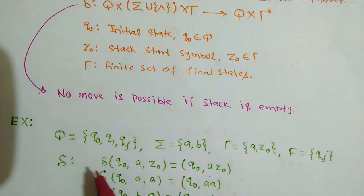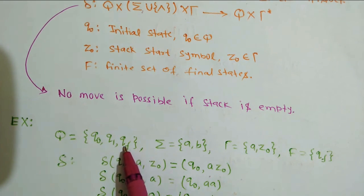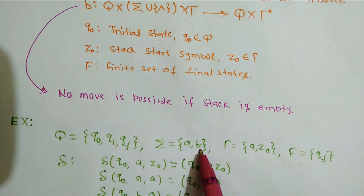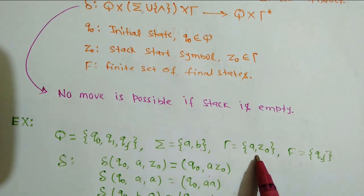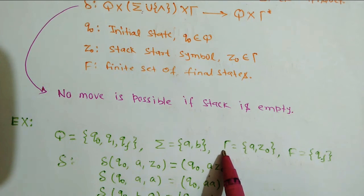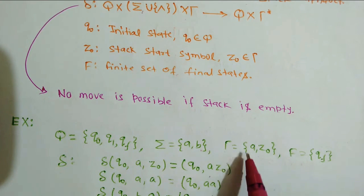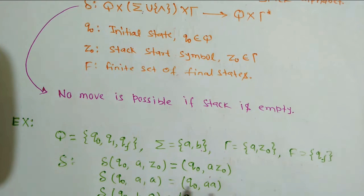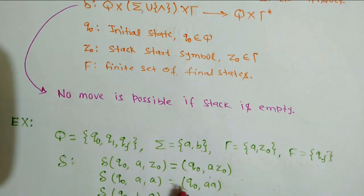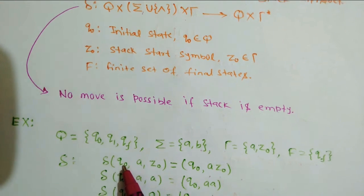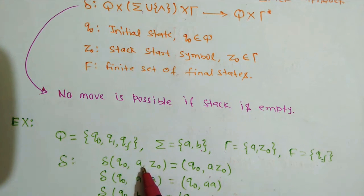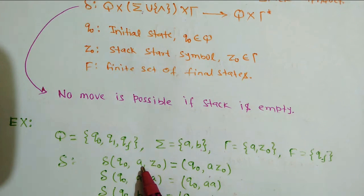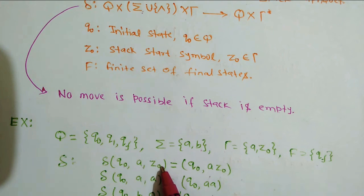Now let's understand this concept with a simple example. We have three states, two input symbols, and two stack symbols: a and z-naught. We will also understand what stack symbols are through this example. There is one final state qf. From state q-naught, after accepting 'a' and with z-naught on top of the stack, it moves to state q-naught with the top two elements of the stack being a and z-naught.